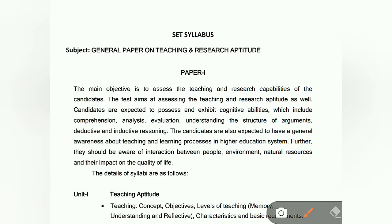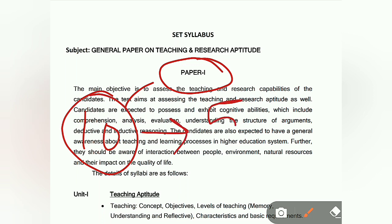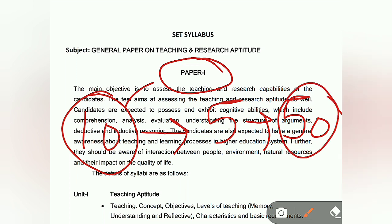We have Paper 1. How many units do we have? It is 10 units. We will discuss about these 10 units. Each unit will have 5 questions, so that makes 50 questions total. Each question will be 2 marks, so it will be 100 marks for Paper 1.